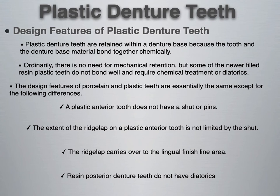Plastic denture teeth are retained within a denture base because the tooth and denture base material bond together chemically. This does not mean you cannot also add mechanical retention through cutting holes or diatorics into plastic teeth, but they do not come with those mechanical retention properties. Some newer filled resin and plastic teeth do not bond well and require chemical treatments or diatorics — this is especially true for composite teeth, as composite and acrylic are not the same and do require bonding agents.